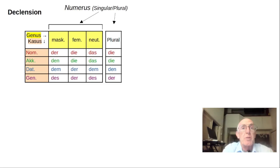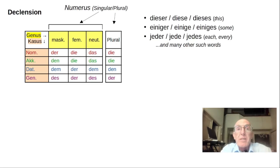This variation of forms is called declension. Once you've learned this pattern, you can apply it to many words that have the same declension as der, die, das.